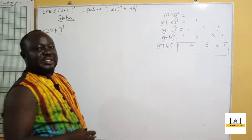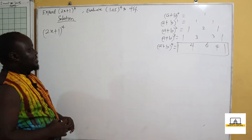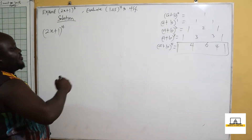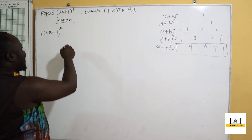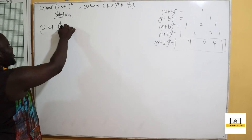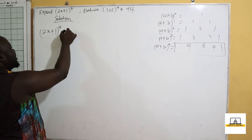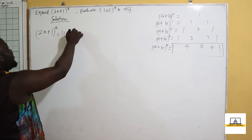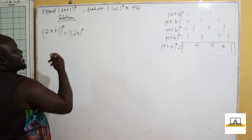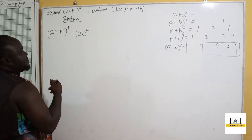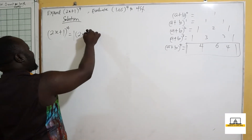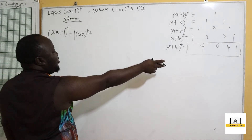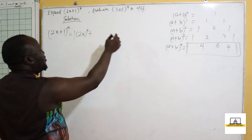Our coefficients are 1, 4, 6, 4, 1. So for (2x + 1)^4, we start with coefficient 1: we have 1 times (2x)^4 times (1)^0. Then plus, the next coefficient is 4: we have 4 times (2x)^3.